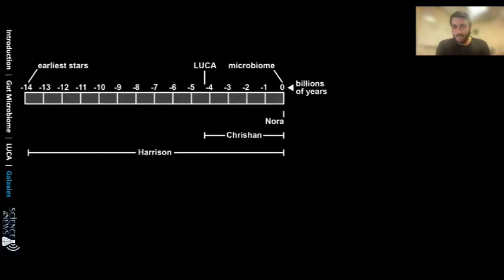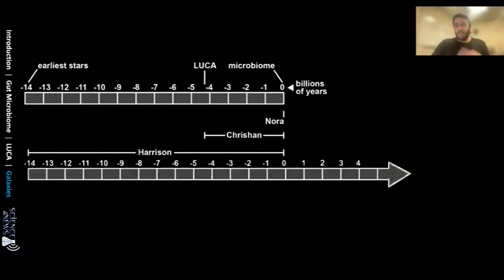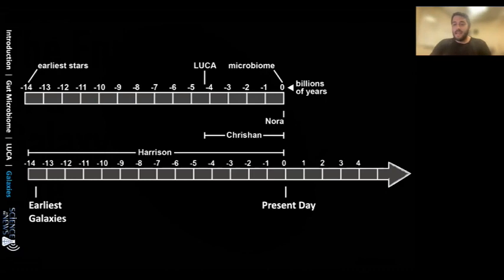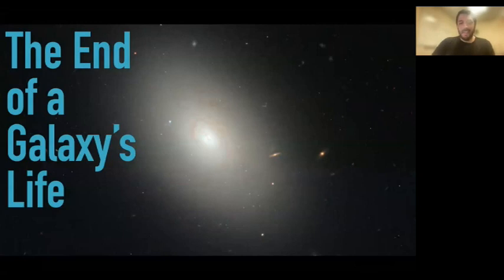To bring us back to the timeline: the ultimate takeaway is that the universe on a galaxy scale is actually very young. The earliest galaxies started around 13 billion years ago. In about 4 to 5 billion years, the Andromeda and Milky Way galaxies will collide. But galaxy evolution will continue for many billions, if not trillions, of years into the future. There's a giant question mark on all of this evolution because we still have a lot of evolution left to go. Thank you.